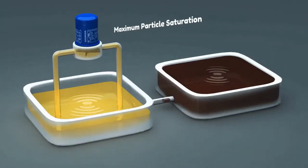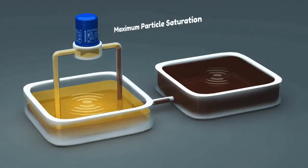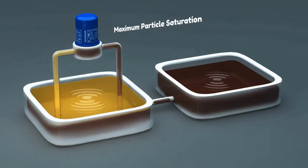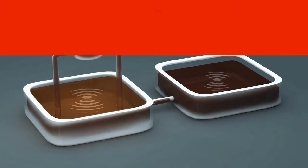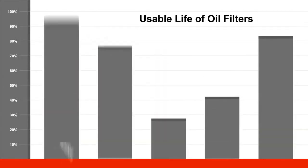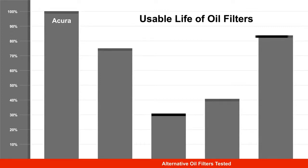Once the filter reaches maximum particle saturation, the oil filter can no longer keep the oil clean. The time it takes the oil filter to reach maximum saturation is called the life of the filter. The life of the aftermarket oil filters tested ranged from 31 percent to 83 percent of the life of the Acura Genuine Oil Filter.